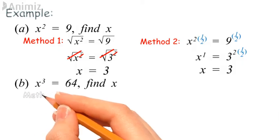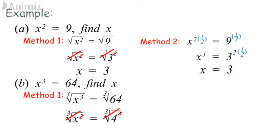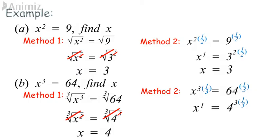Example B. Method 1 using cube roots: cube roots are used to eliminate cubes. In an equation, if we take the cube root of the left-hand side, we must take the cube root of the right-hand side as well. Since 64 = 4³, the cube root of x³ equals the cube root of 4³, so x = 4. Method 2 using reciprocal: the reciprocal of 3 is 1/3. Multiplying the indices on both sides by 1/3 gives x = 4.